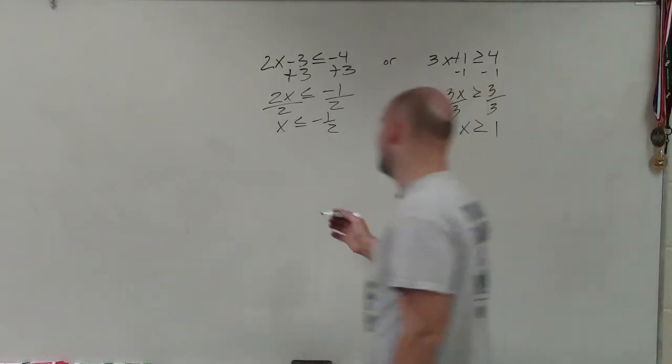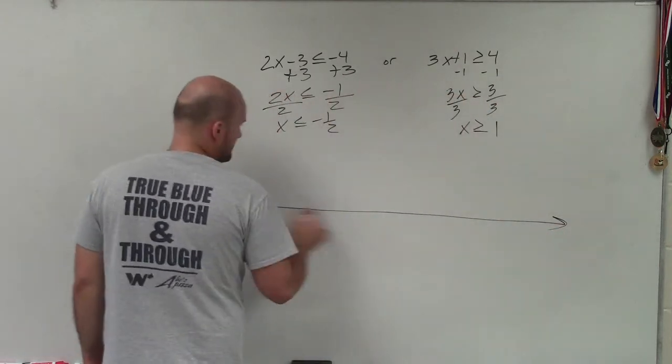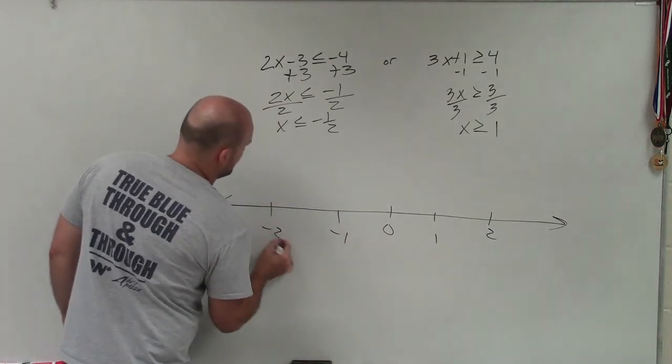OK, so now I can go ahead and graph the solution. And basically, let's say here's 0, 1, 2, negative 1, negative 2.